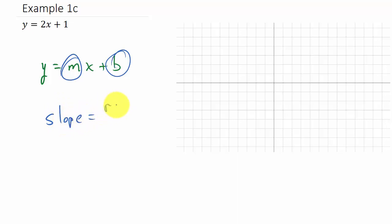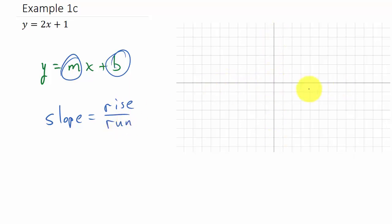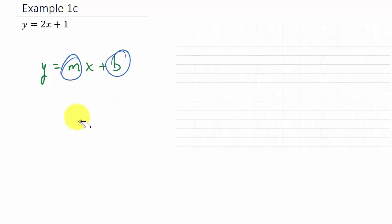You can look at the slope as rise over run — we'll need to look at it as a fraction. The rise tells us how we move up and down, and the run tells us how we move left and right.